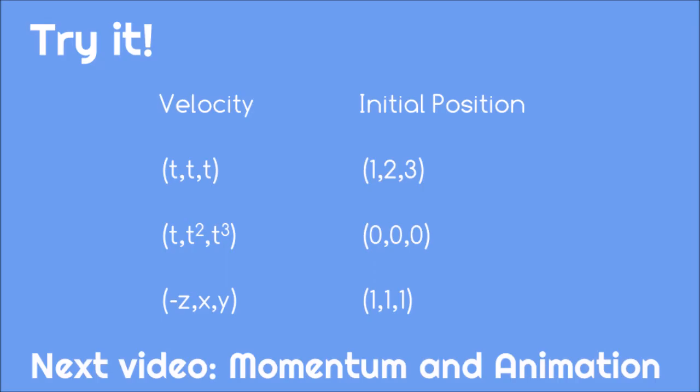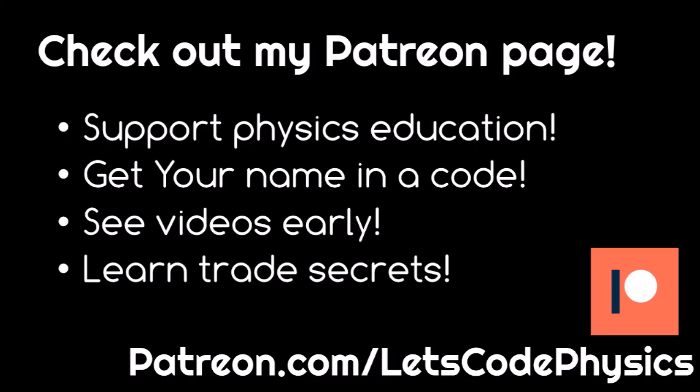You should now be able to use the Euler-Cromer method to find position based on a velocity. Follow the link in the description below to use this code to apply the Euler-Cromer method for the following formulas for the velocity and initial values of position. In the next video, we'll look at how we use the Euler-Cromer method in physics to relate an object's momentum to its velocity and position, and we'll learn how to create an animation from our code.